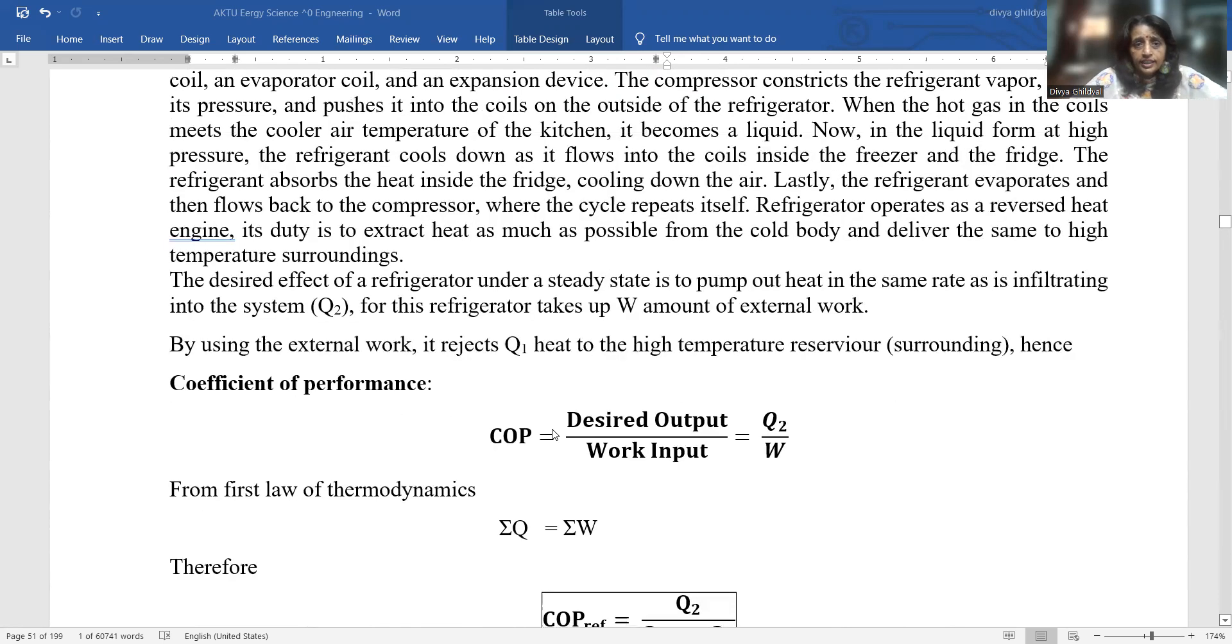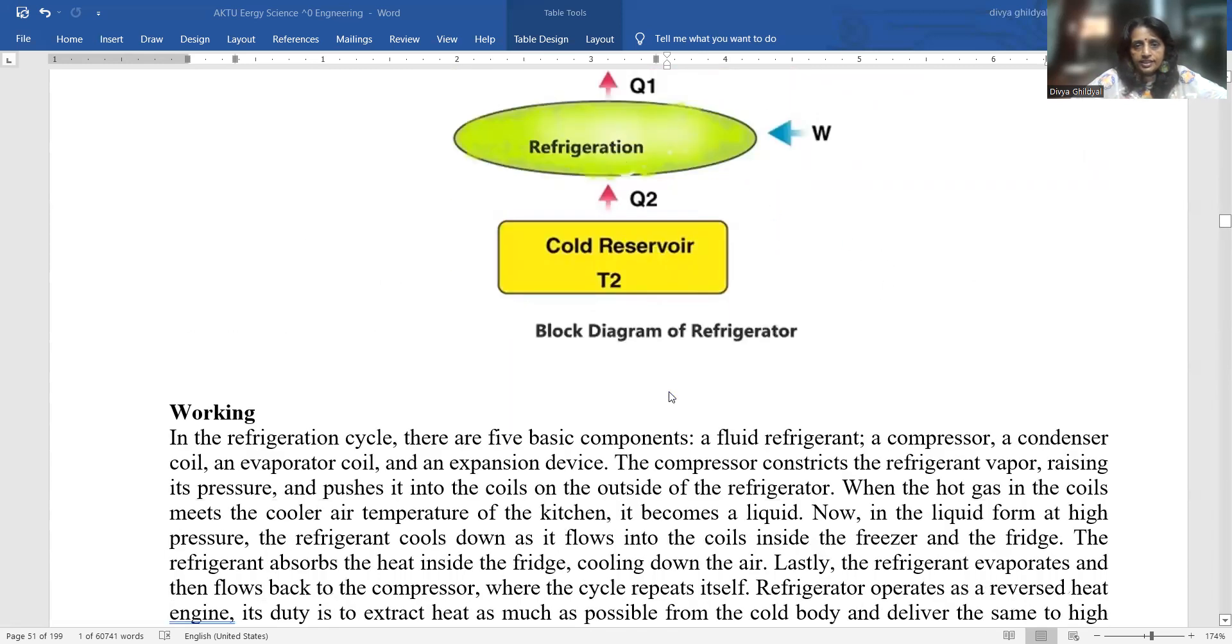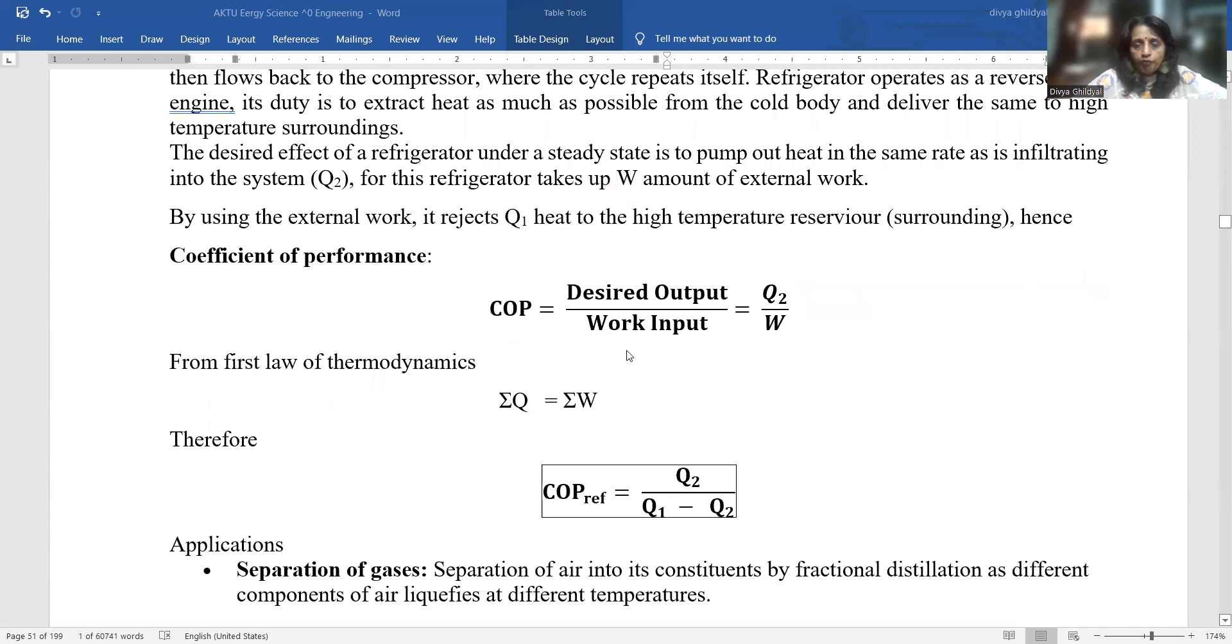As I told you earlier, the desired effect of a refrigerator under steady state is basically to pump heat out at the same rate as it is inflating it into the system. For this, the refrigerator is taking double amount of external work. The coefficient of performance in your whole paper is the ratio of output to input, that is Q2 by W. From first law of thermodynamics, we have total Q equals total work done. So coefficient of performance comes out as Q2 upon Q1 minus Q2.